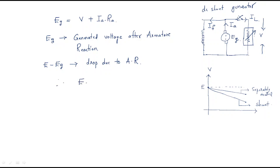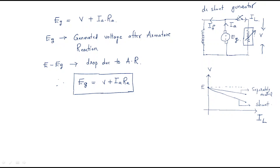Sometimes we do not consider the armature reaction drop directly, and write EG = V + IA × RA. If you plot load current versus EMF, in the ideal case the generator EMF is constant. For a separately excited generator, a separate supply generates the flux, and the machine is connected to a load separately.